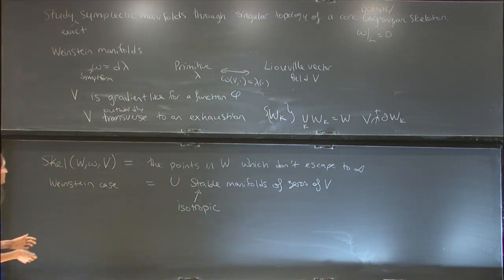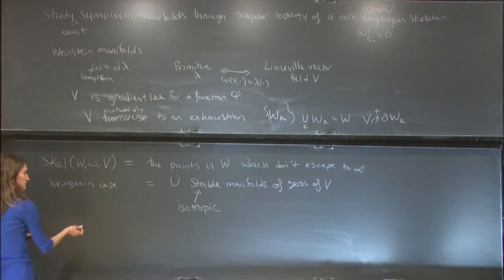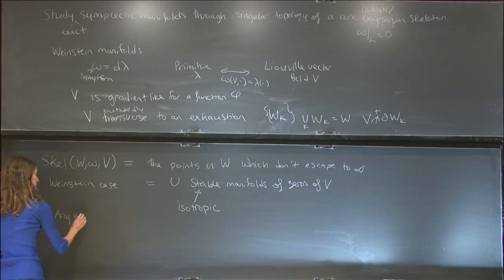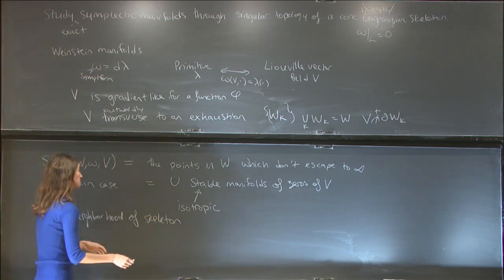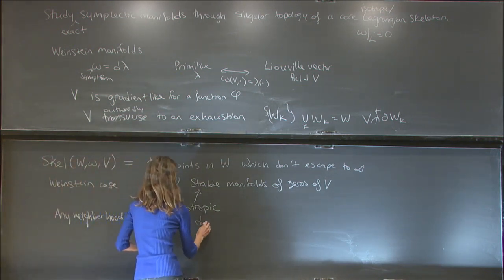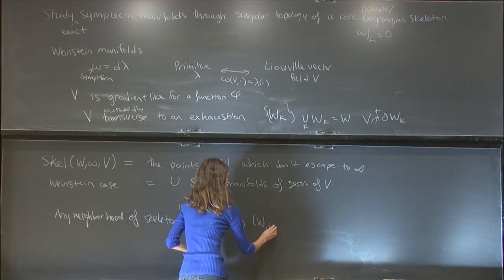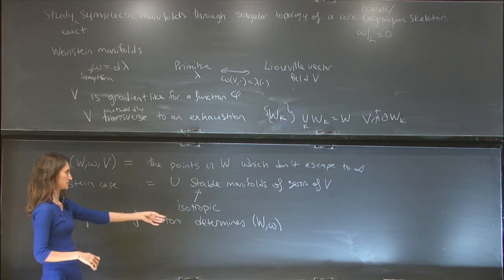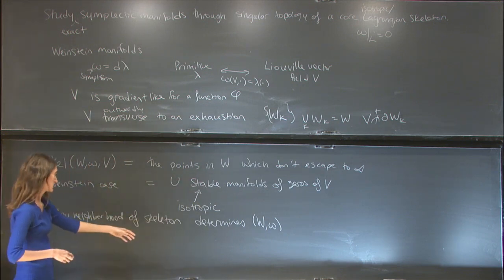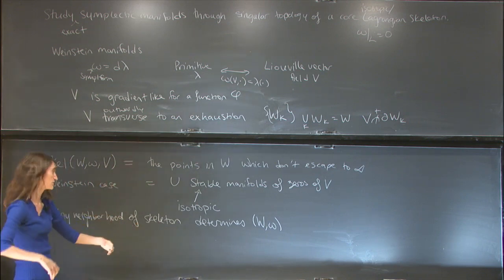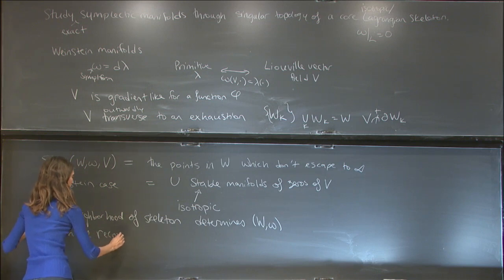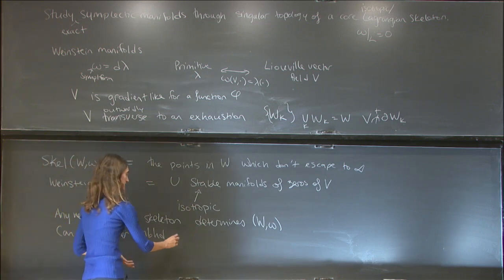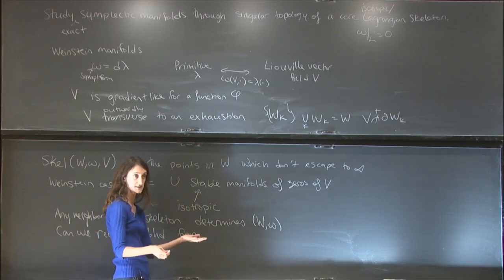The first remark is that any neighborhood of this skeleton will uniquely determine the entire symplectic manifold, because as soon as you've captured all the topology of the zeros, the rest is just the cylindrical end — you can get W from any neighborhood by just attaching a cylindrical end. The deeper question is: when can we recover a neighborhood of the skeleton just from the abstract stratified topology of the skeleton itself?